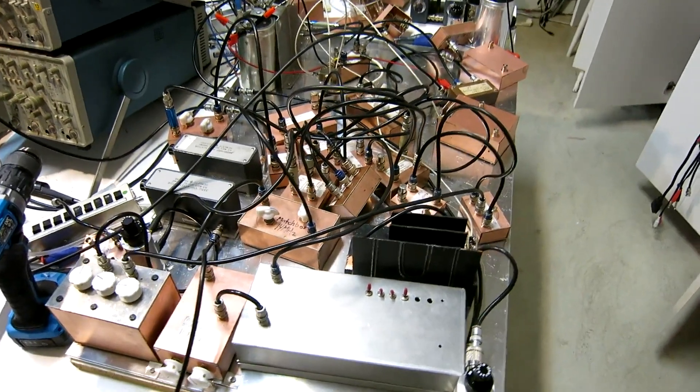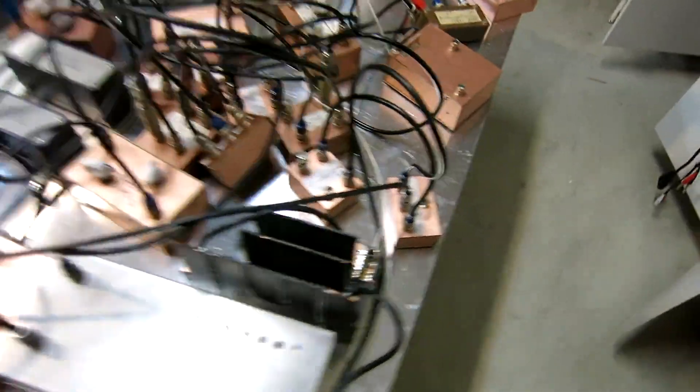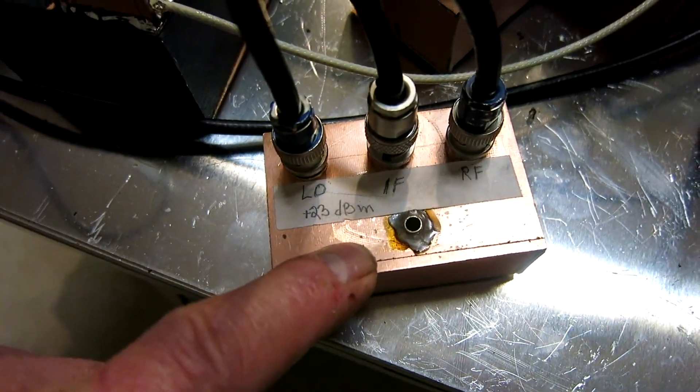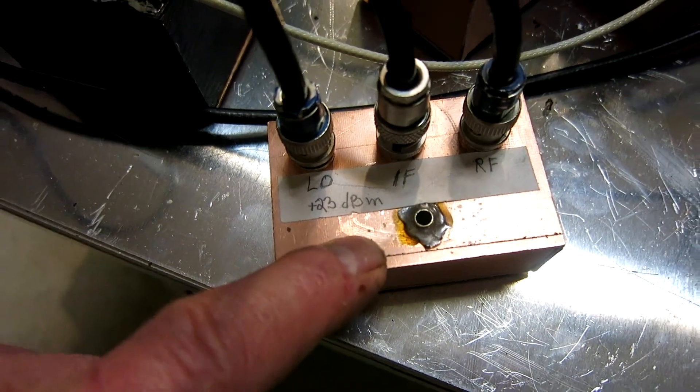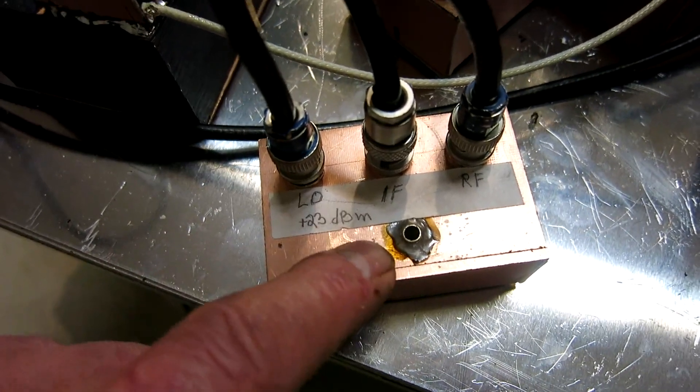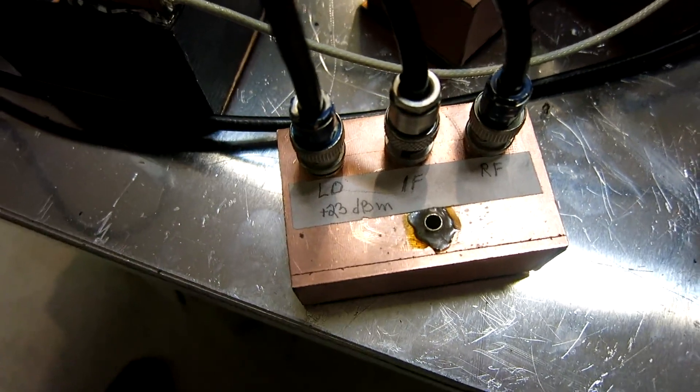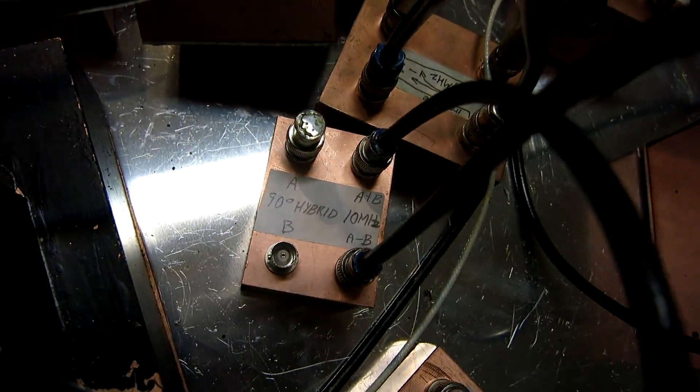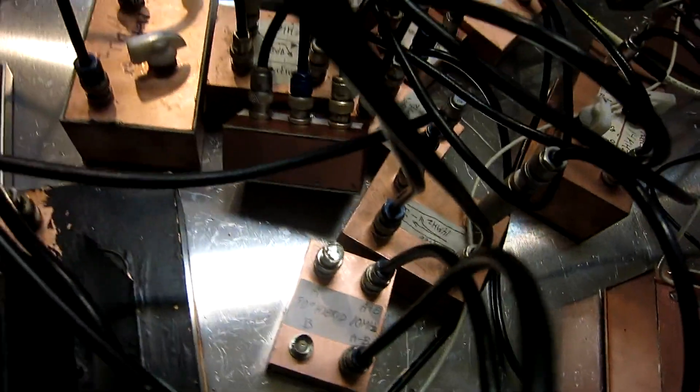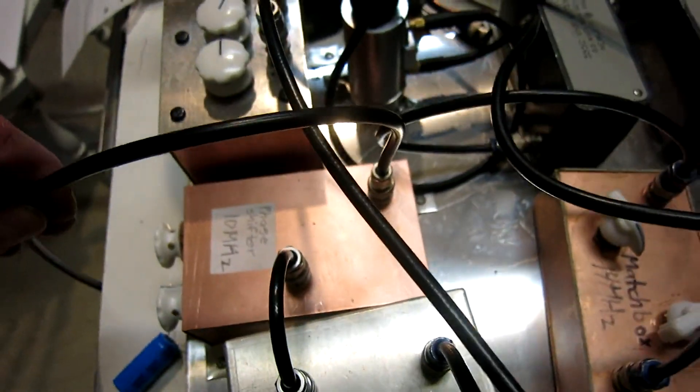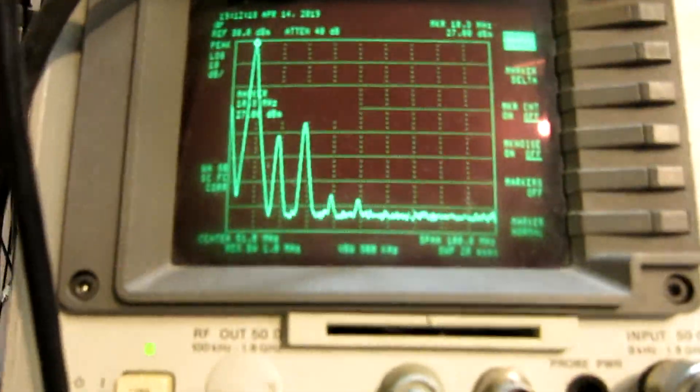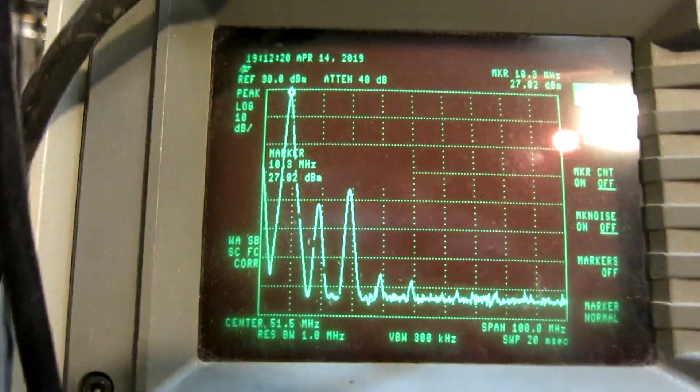This is my setup for interferometry. I have here a Schottky diode mixer, the 23 dBm level. So this can take more power than the one I recently showed. And here is the 90 degree hybrid. And at the moment I am taking the signal that I am going to feed there into the spectrum analyzer.